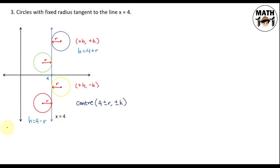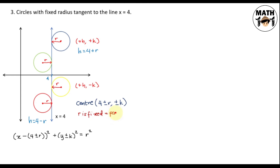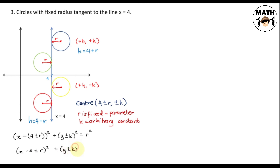Writing the equation for these circles: x minus (4 ± r) squared plus y minus (± k) squared equals r squared. How many arbitrary constants do we have? Since r is fixed, it is a parameter. Our only arbitrary constant is k, meaning we differentiate only once. Let's distribute the terms before differentiating: x minus 4 plus or minus r squared plus y plus or minus k squared equals r squared.